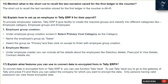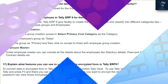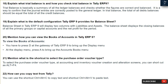Question 17: What features can you use to convert data in encrypted form in Tally ERP9? To convert data in encrypted form, you can use the function Tally Vault. To use Tally Vault, go to the Gateway of Tally and press F3, then select the company for which you want to encrypt the data. Only persons having a valid password can view those encrypted data.